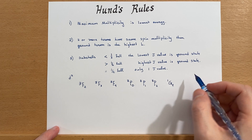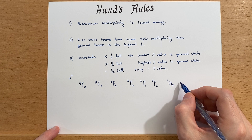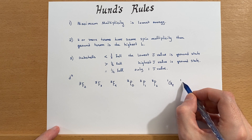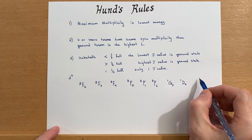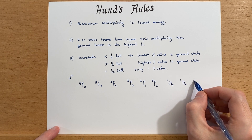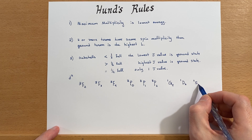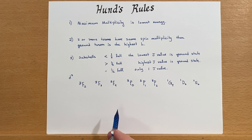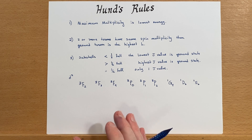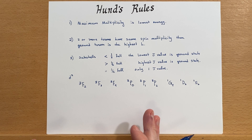For singlet G we write the J value — there's only one. Next would be singlet D, and then finally the highest energy term is singlet S. We'll use these term orderings to examine electronic spectra.